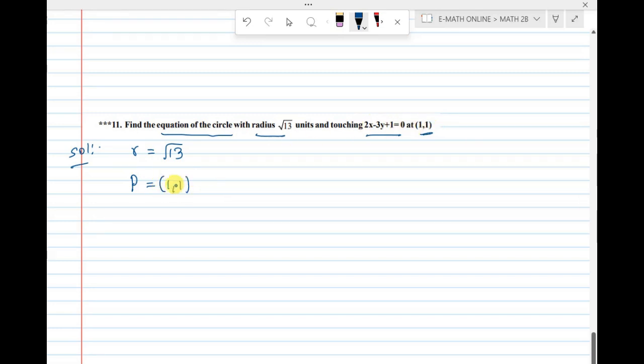And the point mentioned is (1,1). A point at (1,1). And for us, tangent, a point touches. I'll call this as a tangent, the line 2x minus 3y plus 1 equal to 0.